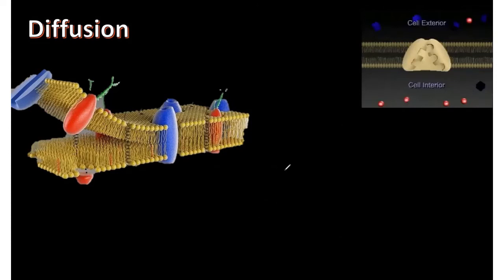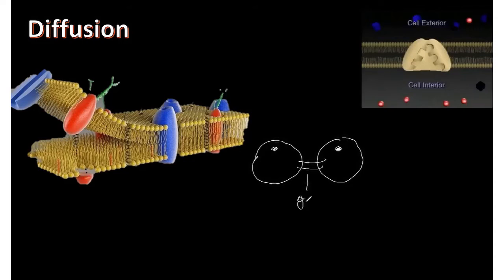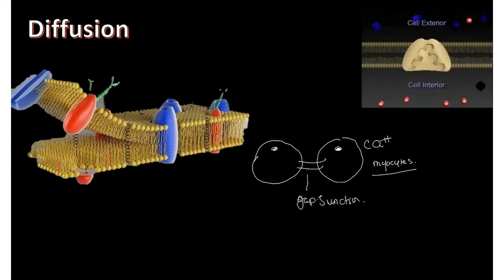Net flux can occur between two cells, which is where gap junctions come into play. A gap junction has pores between two cells that allow free movement of ions down their concentration gradient to balance both sides. This is especially important with calcium in cardiac myocytes and smooth muscle cells — it allows calcium to reach either side, enabling uniform and rhythmic contraction in both the cardiac system and the GI tract.